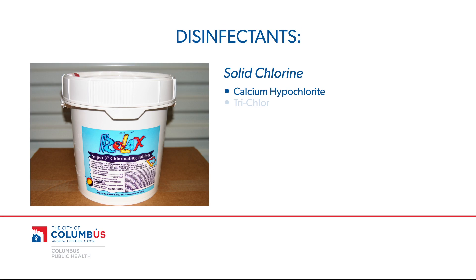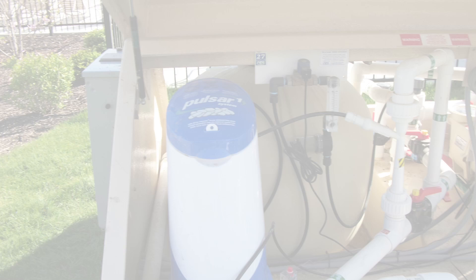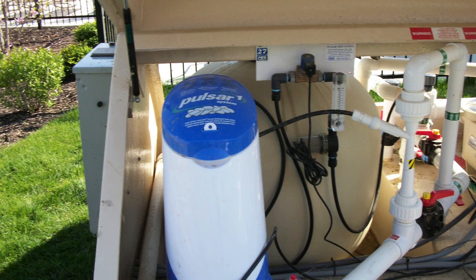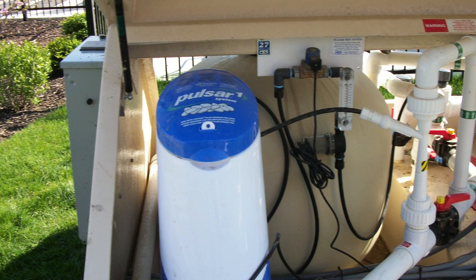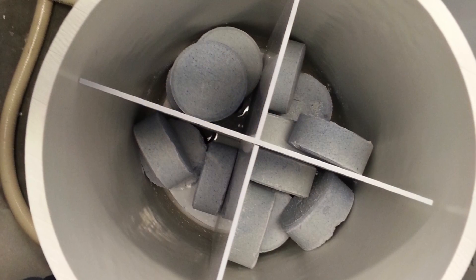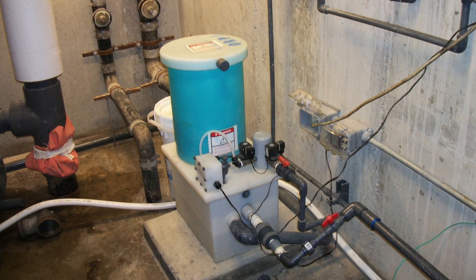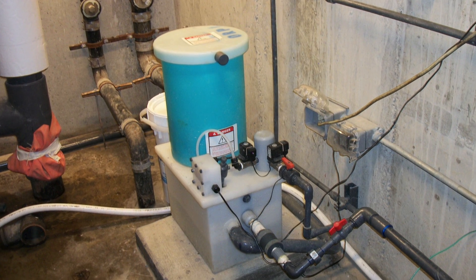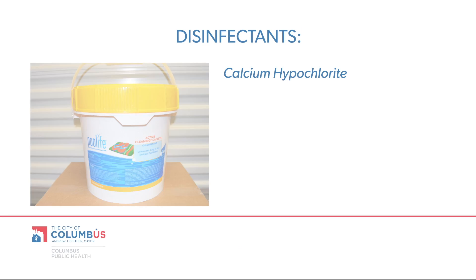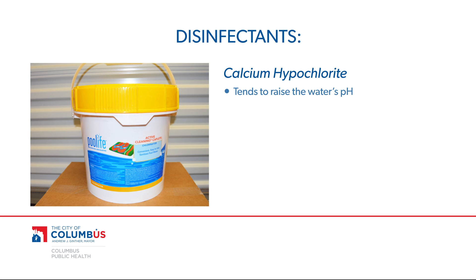Calcium hypochlorite, trichlor, and dichlor are solid forms of chlorine that come in tablets, briquettes, or granules. Calcium hypochlorite is fed into the pool using an erosion feeder. The solid disinfectant is placed in the feeder, water is forced past it and it dissolves, distributing into the return line of the circulation system. Calcium hypochlorite tends to raise the water's pH and can also result in high calcium levels.